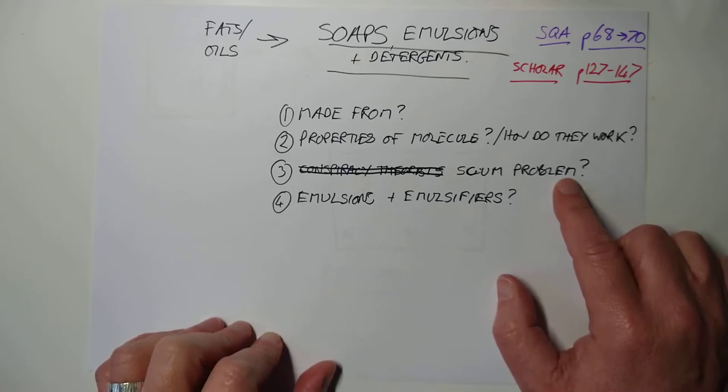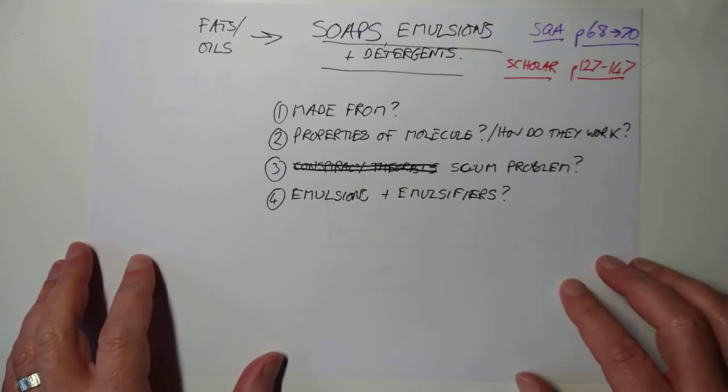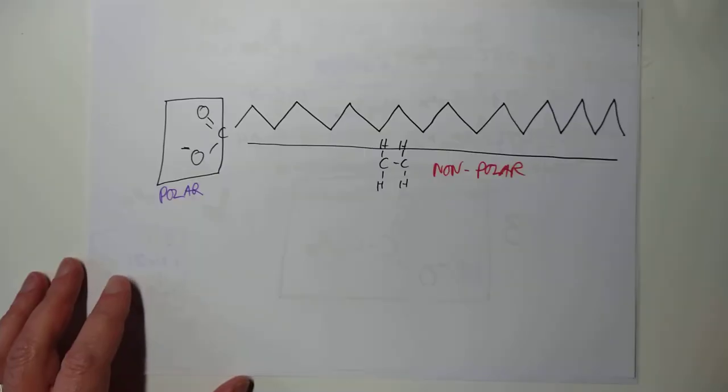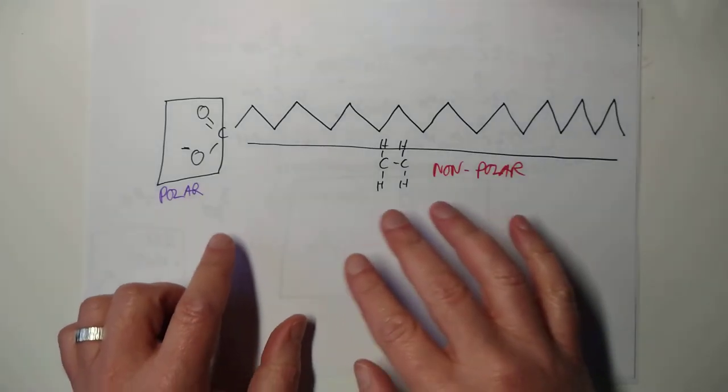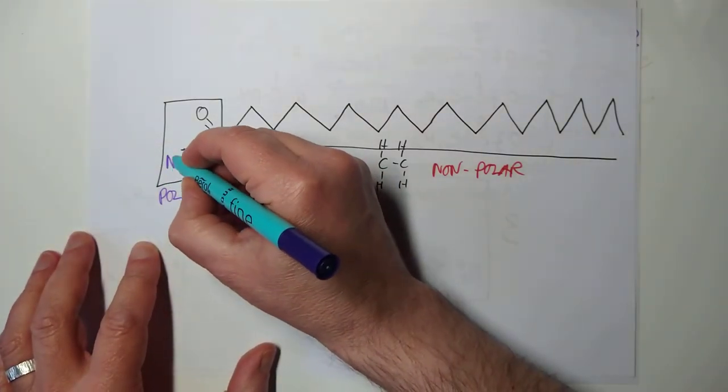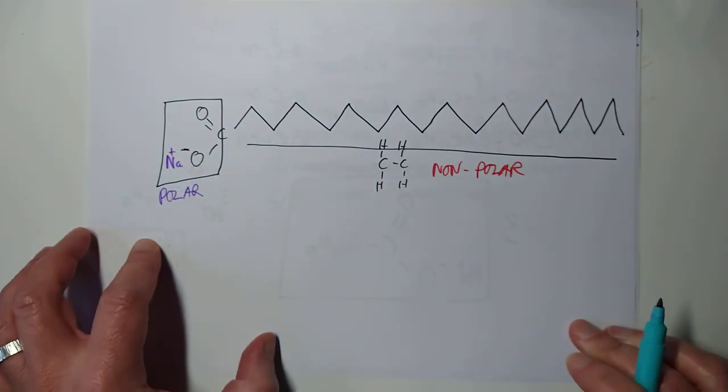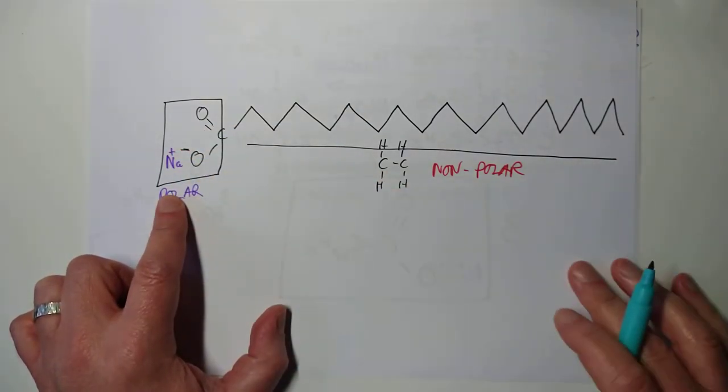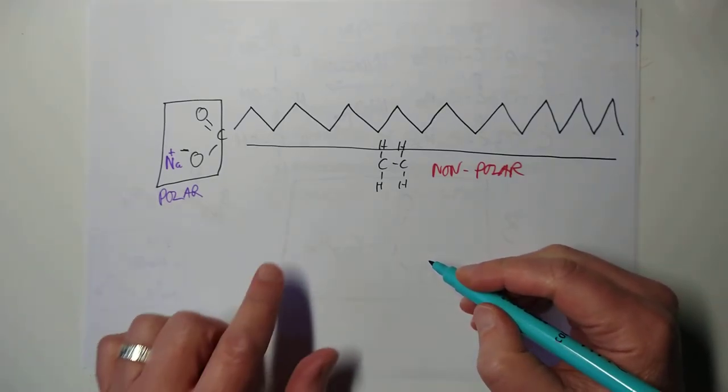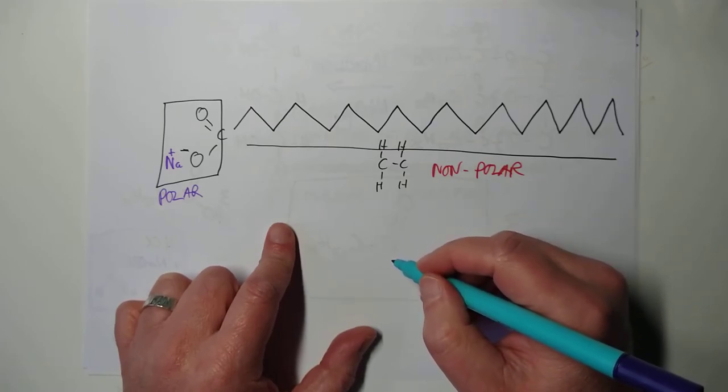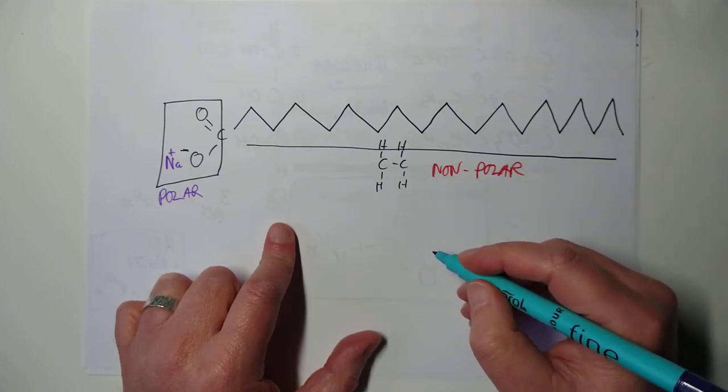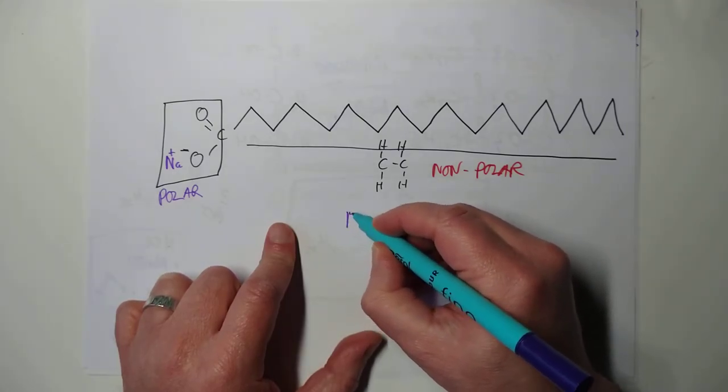Scum. Let's talk about scum and hard water. Not a thing that we have a problem with in Scotland, but let's talk about what it is and why it's a problem with old-fashioned soaps. Here was our soap molecule. This comes from the factory with a sodium ion on here. And everything's peachy keen and it dissolves in water.